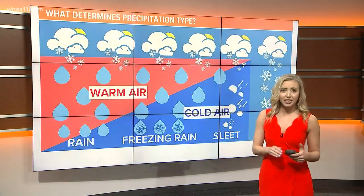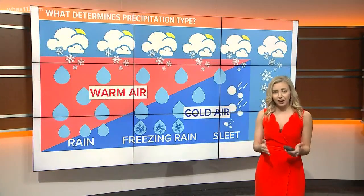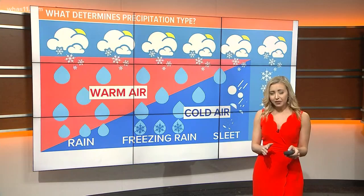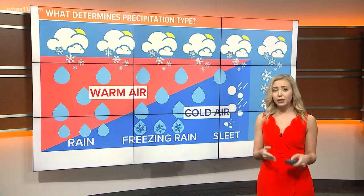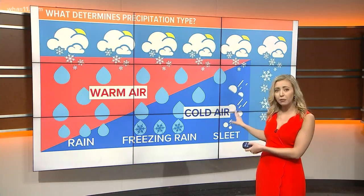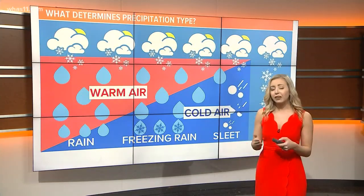Much of the determination is due to different temperatures in various layers of the atmosphere. Clouds high up in the atmosphere tend to be very cold, and as precipitation falls down to earth it can encounter warm and cold layers of air.